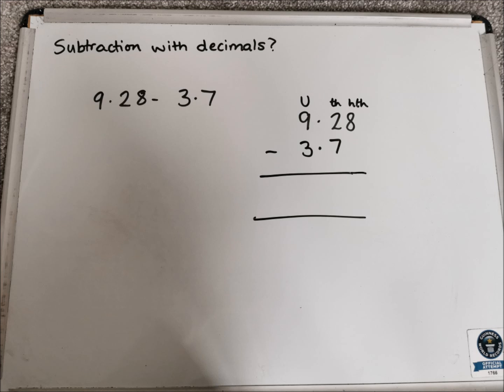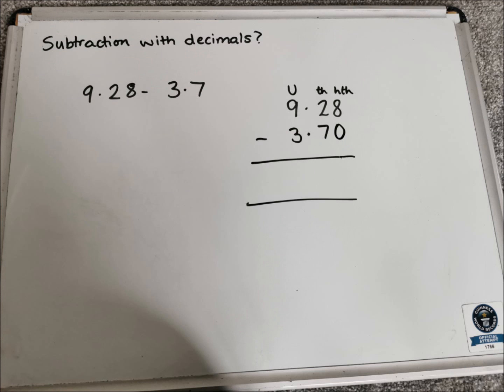So the units, we've got 9 and 3, then the decimal point, then the tenths column, we've got 2, and underneath we've got the 7. Only one number had hundredths, so I've put 8 in the hundredths column. If it helps, you can add in a 0 on the end of 3.7. It doesn't change the number, but it'll help you perhaps work it out. If that helps you, you can add that in.